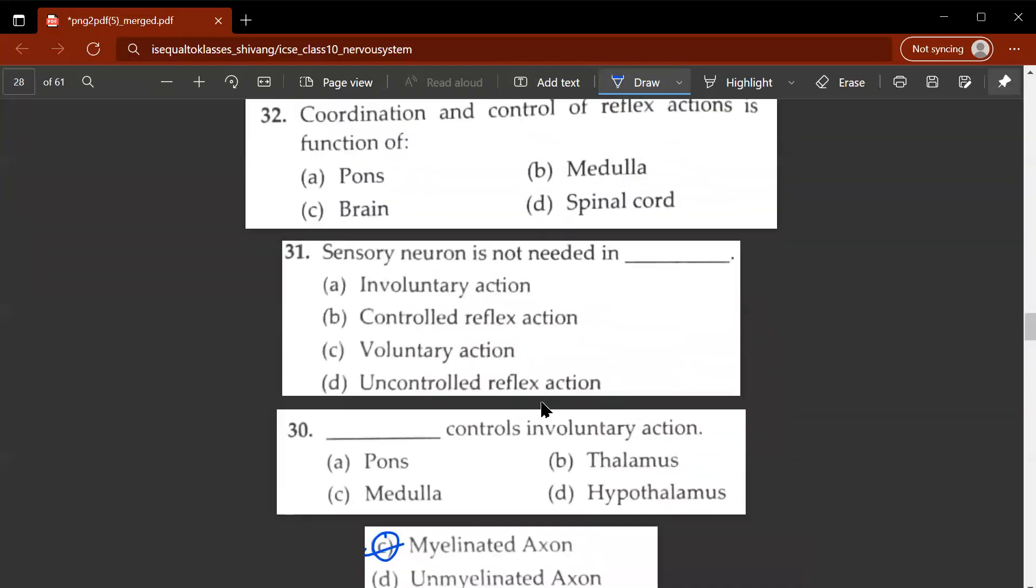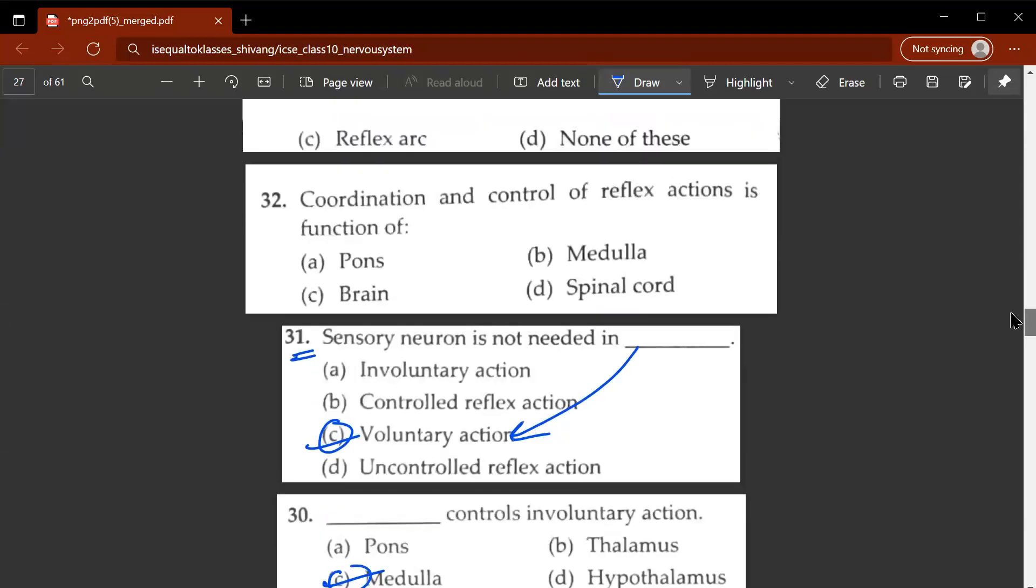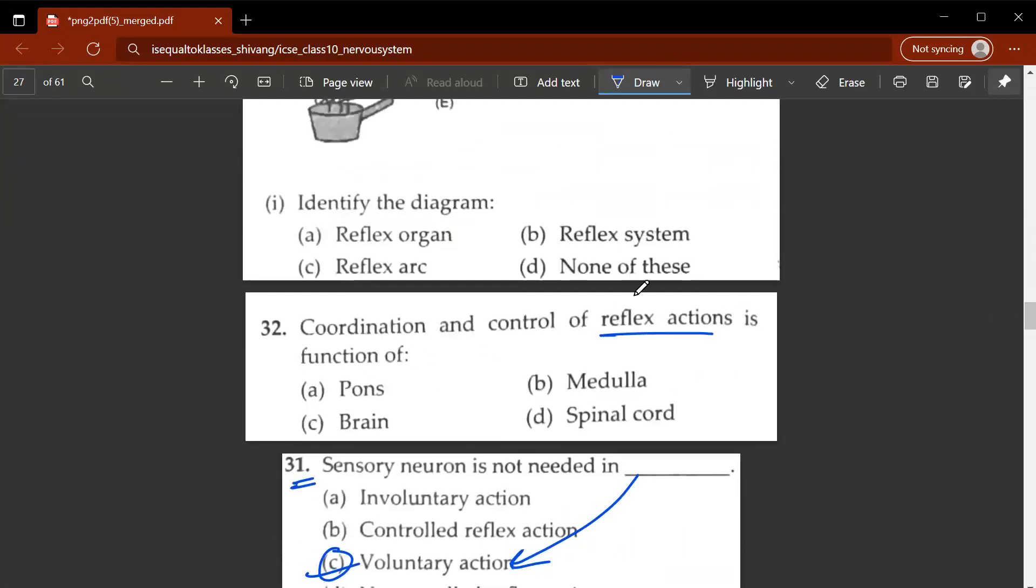30th question. Dash controls involuntary action. So medulla controls involuntary action. Like peristalsis or the beating of the heart. These are all involuntary actions. If you want to lift your finger or if you want to lift your feet or if you decided that you want to walk, that is voluntary action. 31st question. Sensory neuron is not needed in dash. C. Voluntary action. So sensory neuron is not needed in voluntary action. 32nd question. Coordination and control of reflex action is the function of, it is a function of spinal cord.